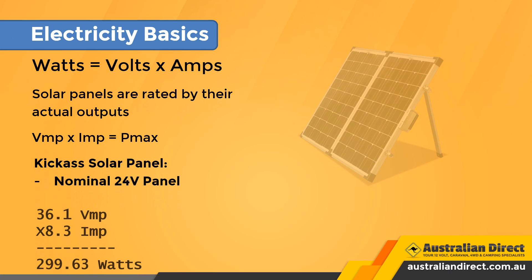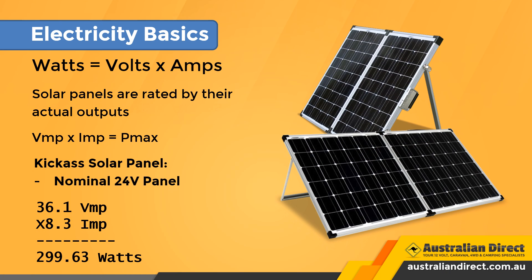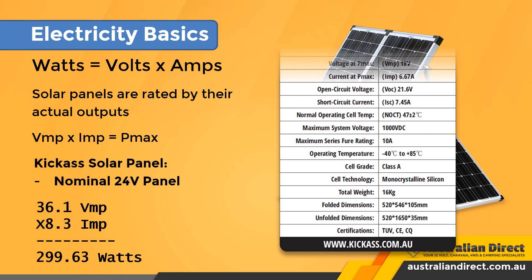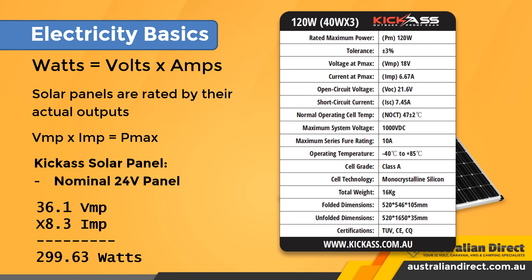Before I go further, I want to go over a quick reminder of power calculations. Solar panels are rated by their actual output when connected to a load. For instance, a generic 300W 24V nominal panel has an actual output of 36.1V and 8.3A. When you multiply them together you get the rated watts: 299.63 watts, rounded up to 300W. You can see the specs on the solar module's back or in its datasheet.